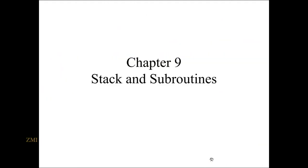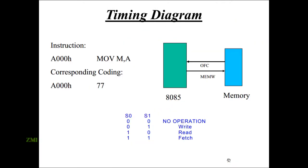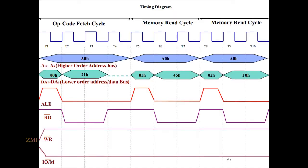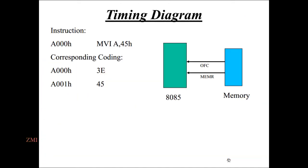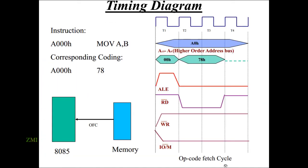Memory write cycle and memory read cycle — in total 3 cycles are given. The opcode fetch cycle is shown here, labeled A0.